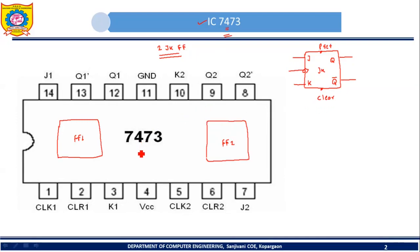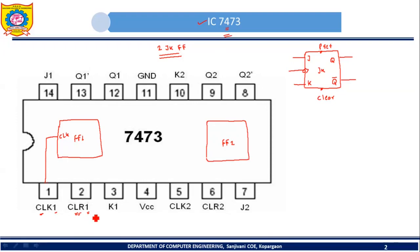Now let's try to understand the pin diagram of 7473. Pin number 1 acts as clock for flip-flop 1. Pin number 2 acts as clear input for flip-flop 1. Pin number 3 will act as K input for flip-flop 1.